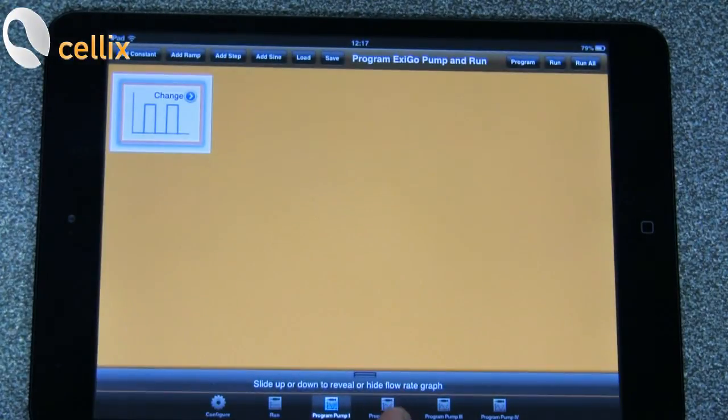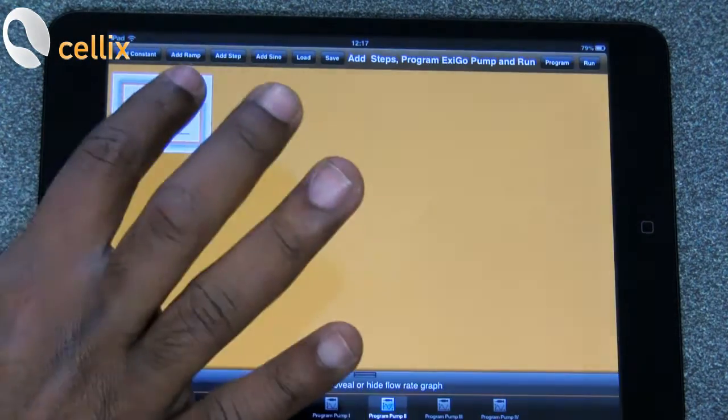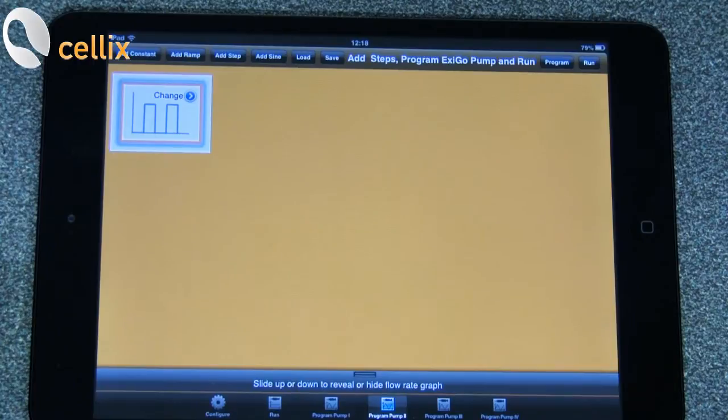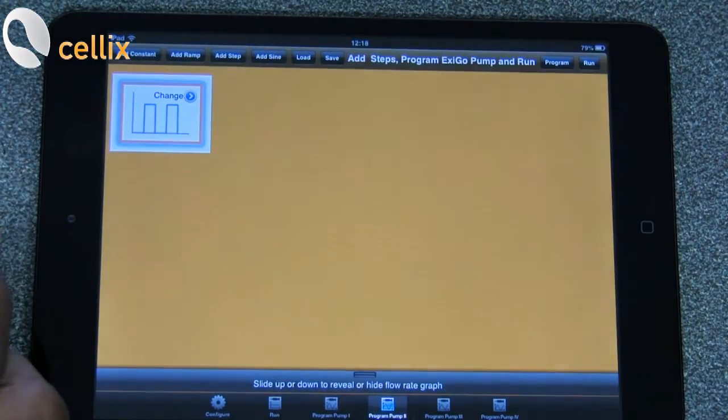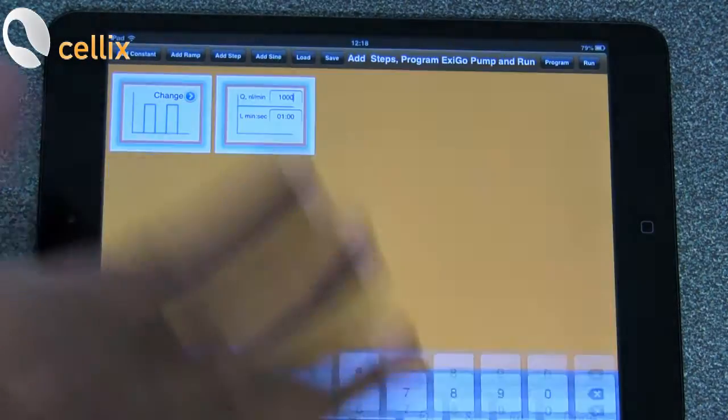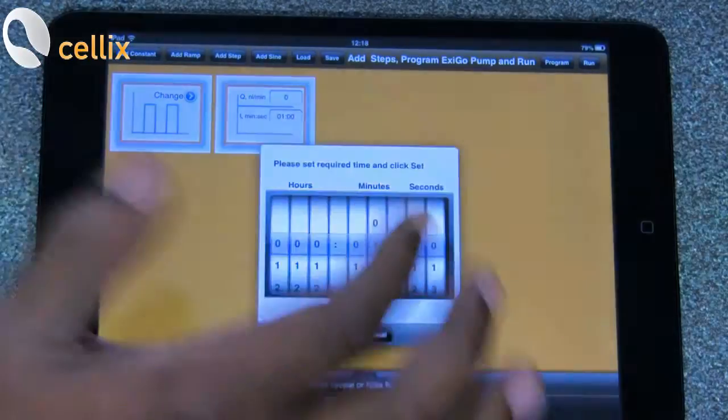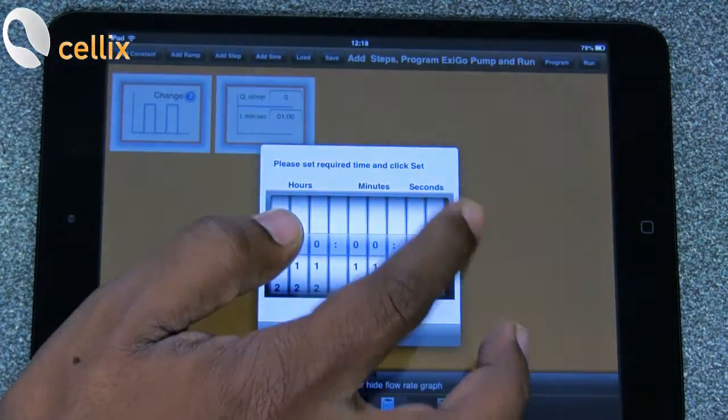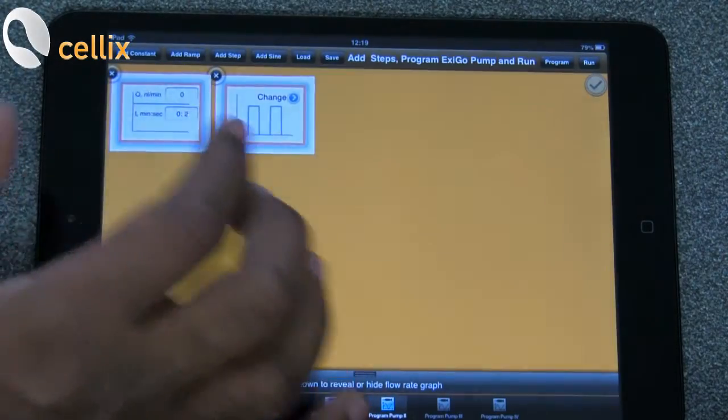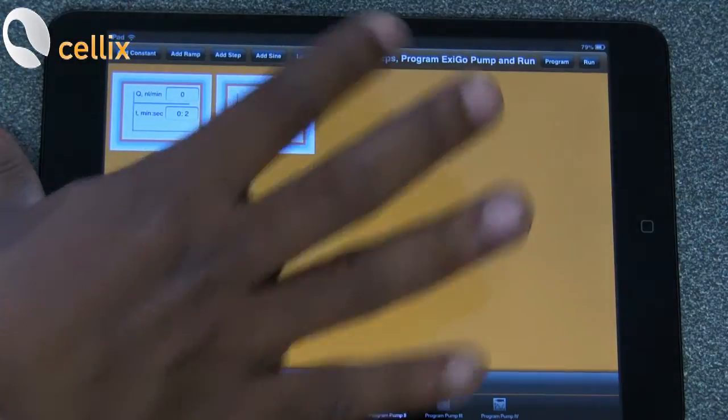And to program the second pump, you go to second pump, you click load. So you have the same parameters there. Since the second pump needs to have a delay of 2 seconds, you have the option for add constant flow where you put 0 nanoliter per minute for 2 seconds. And click. So you can save these parameters with the save option.